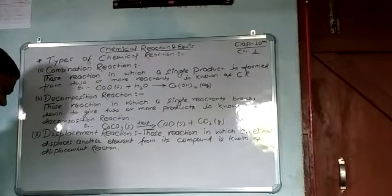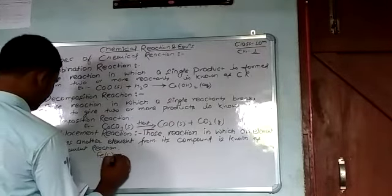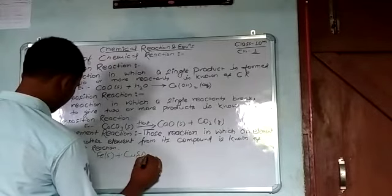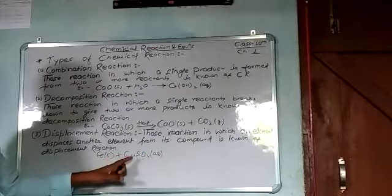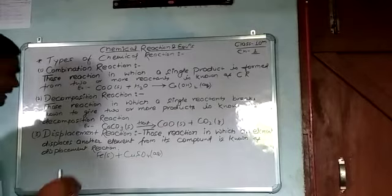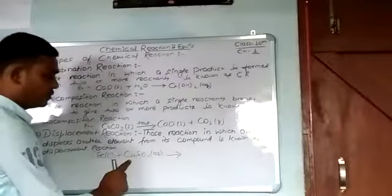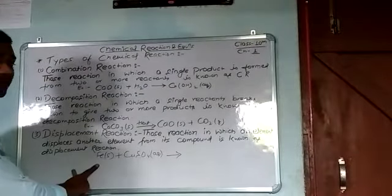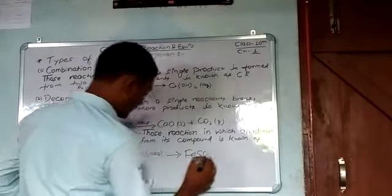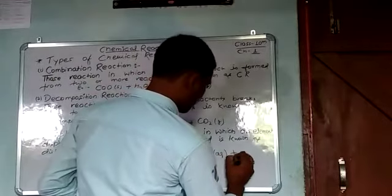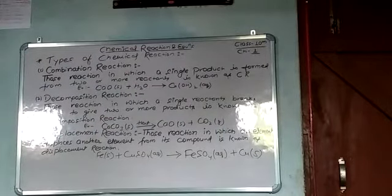Let us see an example. The first example is Fe (solid) plus CuSO4 (aqueous). When iron reacts with copper sulfate, iron (Fe) displaces copper (Cu), and Fe combines with SO4, making FeSO4 (aqueous) plus Cu (solid).